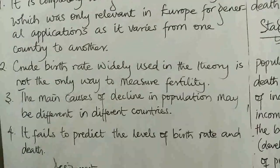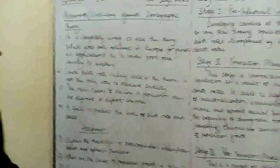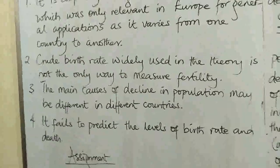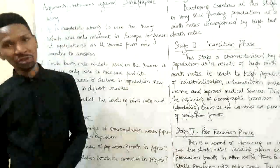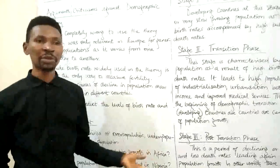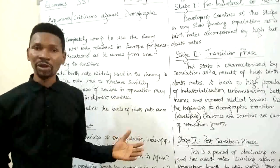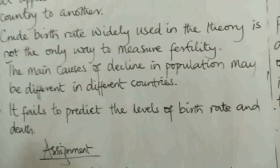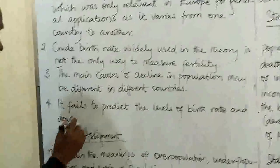Number two, that the crude birth rate, widely used in the theory, is not the only way to measure fertility. Number three, the main causes of decline in population may be different in different countries — the causes of population reduction in one country may not be the same cause for another. For some countries it may be high death rates, while for others it may be problems of emigration. Number four, the demographic theory fails to predict the levels of birth rate and death rate.